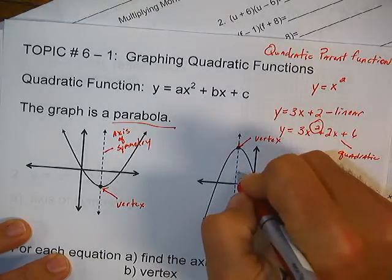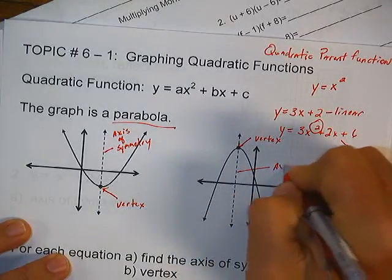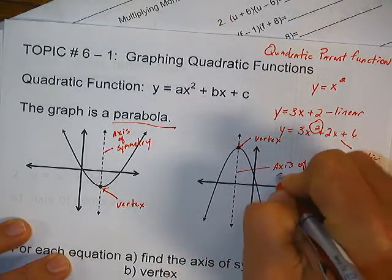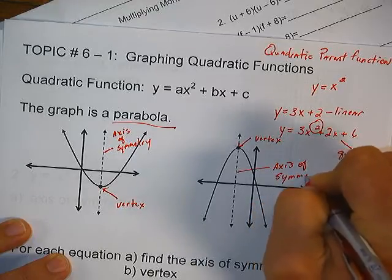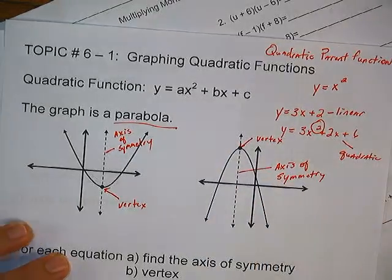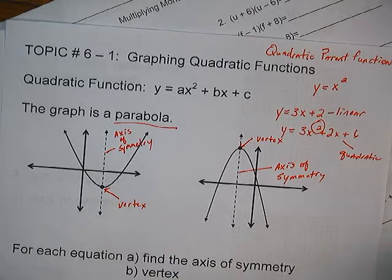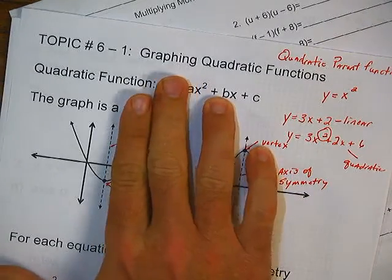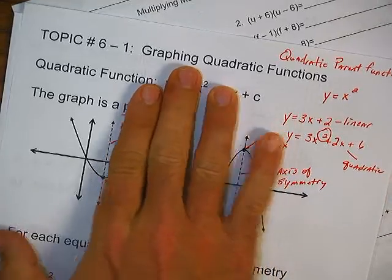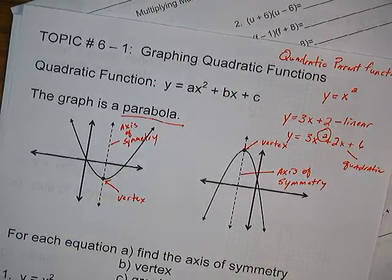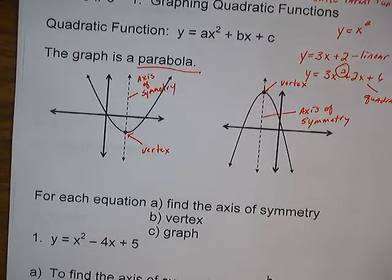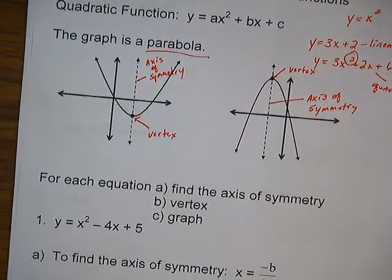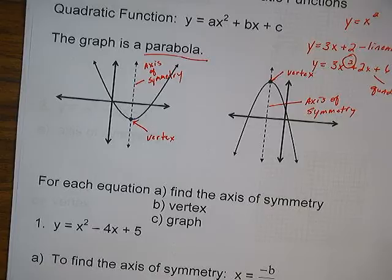This parabola also has an axis of symmetry. The word symmetry means the same, so what's on this side is the exact same but a mirror image of this side. That's the axis of symmetry. Now, the first thing we're going to do is find the axis of symmetry algebraically.